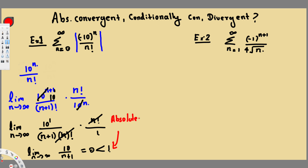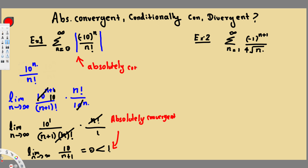But for example, if we don't get absolutely convergent and we get equal to one, we have to ask whether it is conditionally convergent. Or if we get divergent, we also have to ask whether it is conditionally convergent. That's the way to approach this question. We can say this series is absolutely convergent.